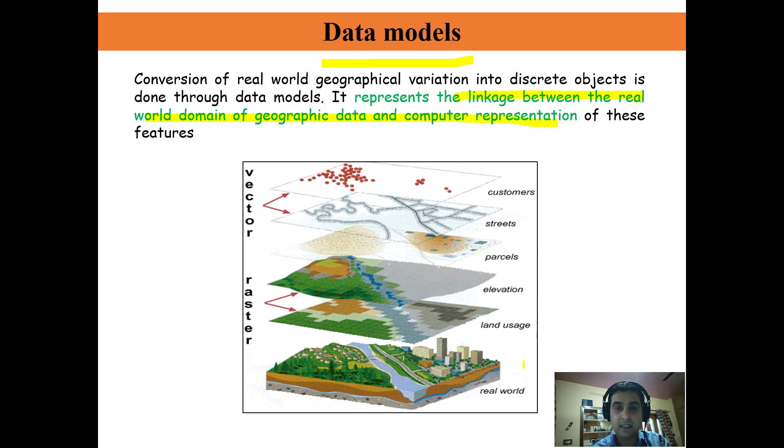To understand it in a better way, this is the real world condition and this is the image that has been taken by the satellite. It's in the raster format, pixelated in the form of cells. Now this is the elevation, which is also raster data.